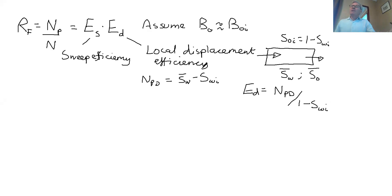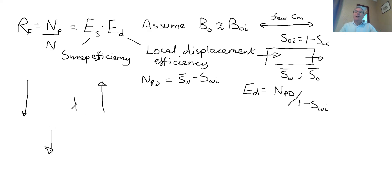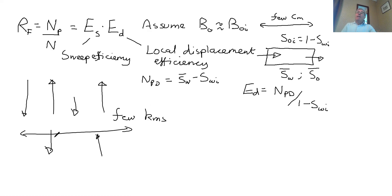So what's the sweep efficiency? Well, the diagram for local displacement efficiency is at a length scale of a few centimeters — how much do I get out of a piece of rock where the water goes? What the sweep efficiency represents is that we might have a reservoir at length scales of a few kilometers, with injector wells, producer wells, lots of injectors, lots of producers in a very complex arrangement.